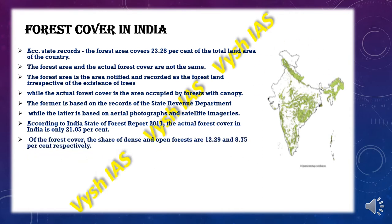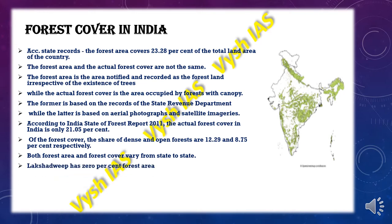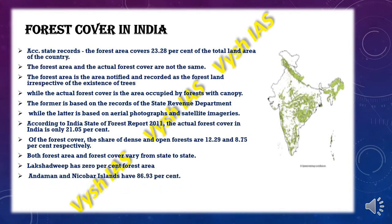The forest cover has two types: dense forest, which accounts for 12.29%, and open forest, which accounts for 8.75% of the total forest cover. Both forest area and forest cover vary from state to state. One important point is that Lakshadweep has 0% forest area, whereas Andaman and Nicobar Islands has 86.93%.